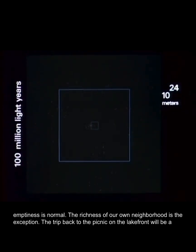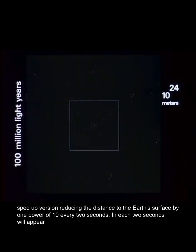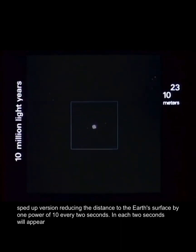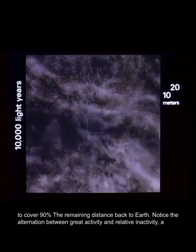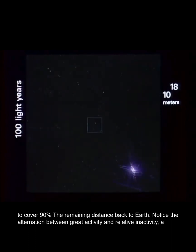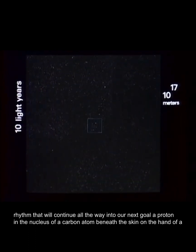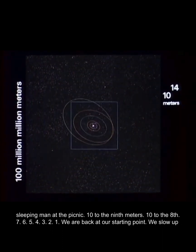The trip back to the picnic on the lakefront will be a sped-up version, reducing the distance to the Earth's surface by one power of 10 every two seconds. In each two seconds we'll appear to cover 90% of the remaining distance back to Earth. Notice the alternation between great activity and relative inactivity, a rhythm that will continue all the way into our next goal: a proton in the nucleus of a carbon atom beneath the skin on the hand of a sleeping man at the picnic.